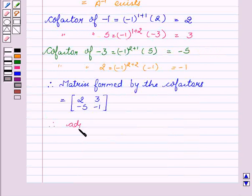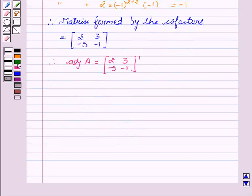Therefore adjoint of A equal to transpose of the cofactor matrix [2, 3; -5, -1]. This is equal to [2, -5; 3, -1].